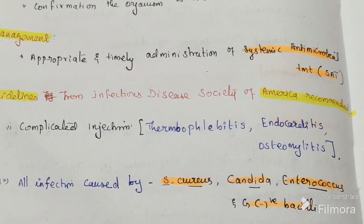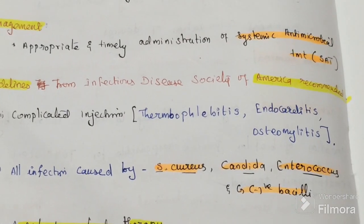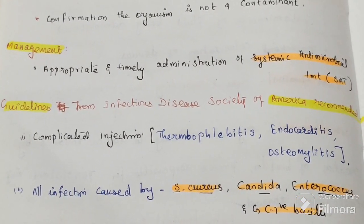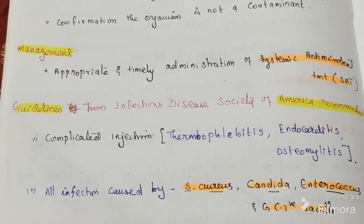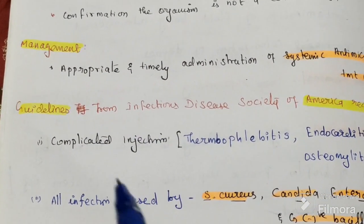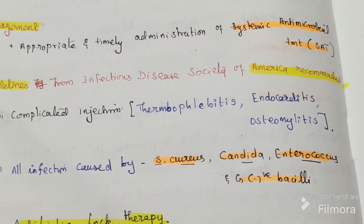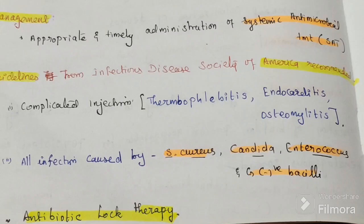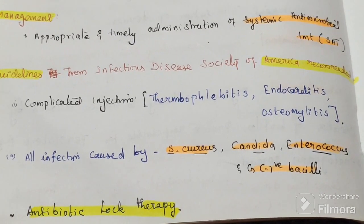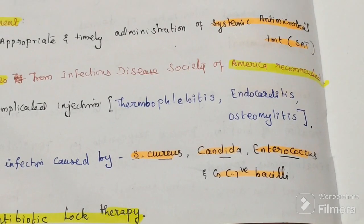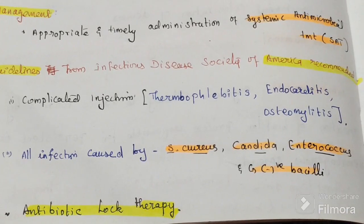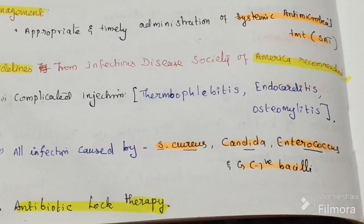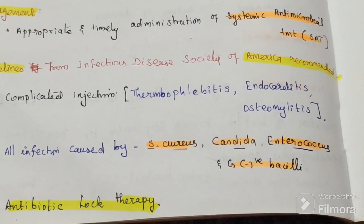Management includes appropriate and timely administration of systemic antimicrobial treatment, followed by catheter removal or catheter salvage treatment. The Infectious Disease Society of America recommends removal of the catheter in complicated infections, and in all infections caused by microorganisms such as Staphylococcus aureus, Candida, Enterococcus, and gram-negative bacilli. The catheter may be retained in coagulase-negative staphylococcus infections if systemic antibiotics are given in conjunction with antibiotic lock therapy.